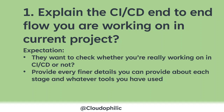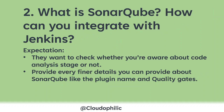Moving to the next question: what is SonarQube and how can you integrate it with Jenkins? They want to see whether you are aware of code analysis. You need to explain that SonarQube is used for code analysis, and it has features like code smells. In SonarQube you define quality gates — say 80% or 85%, whatever the passing criteria is — and define those quality gates inside SonarQube.